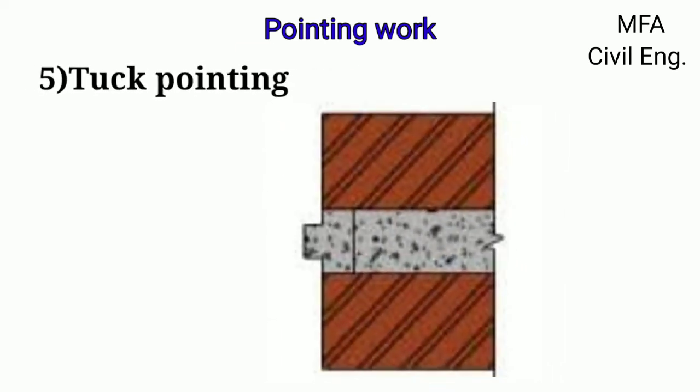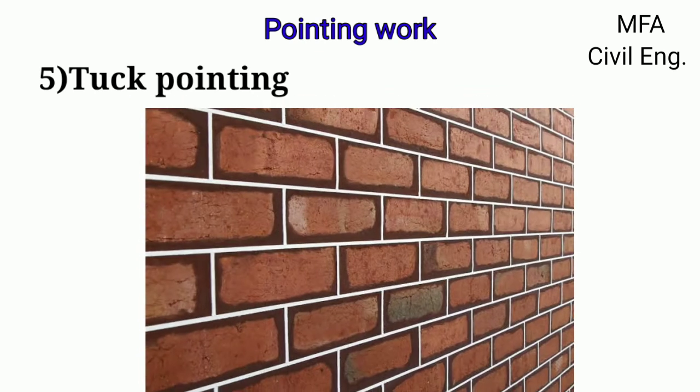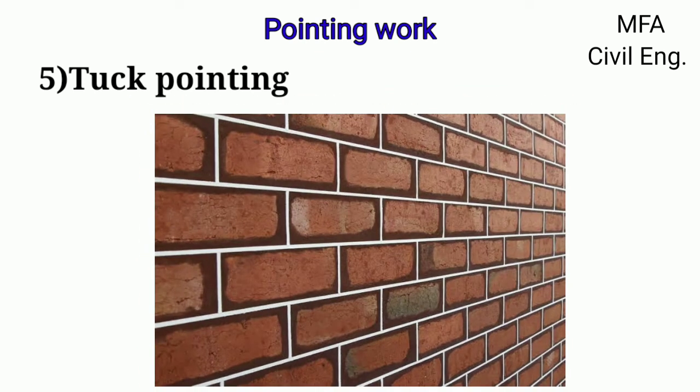In tuck type of pointing, the mortar is pressed inside the joint and finished flush with the face of the wall. When mortar is still wet, a rectangular groove is formed at the center of the joint. This groove is filled with white lime putty or a small quantity of silver sand, keeping it slightly projecting outside the finished surface of the pointing plaster. This type of pointing gives an attractive appearance but the fillet part is not very durable.